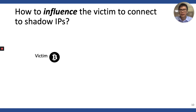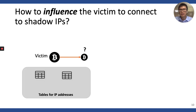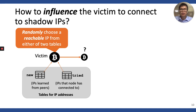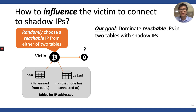Before knowing how to influence the victim, we need to know how a Bitcoin node opens an outgoing connection. Basically, a Bitcoin node stores the IP addresses of other peers in two tables. The new table stores all IPs this node learned from other peers, and the tried table contains the IPs that this node has connected to in the past. When it opens an outgoing connection, it randomly chooses a reachable IP from either table. It is important to note that only reachable IPs are chosen, because the tried table also has unreachable IPs that the node cannot open a connection to. So the attacker's goal here is to dominate the reachable IPs in both tables with the saddle IPs.